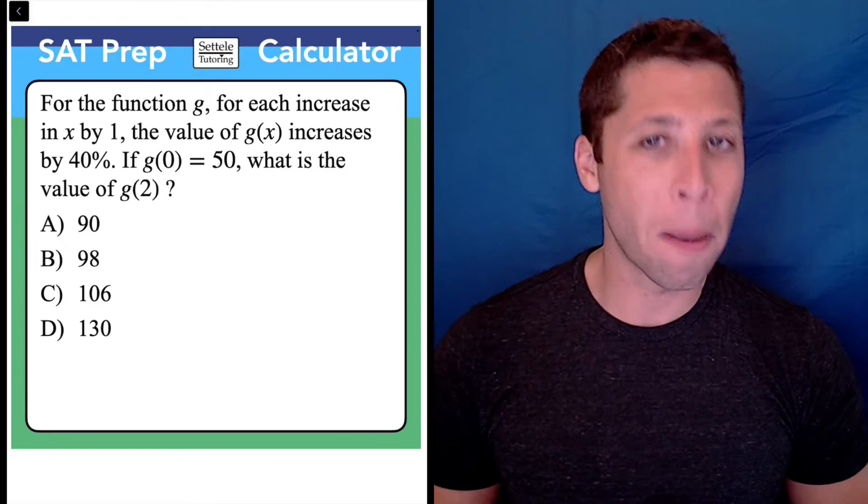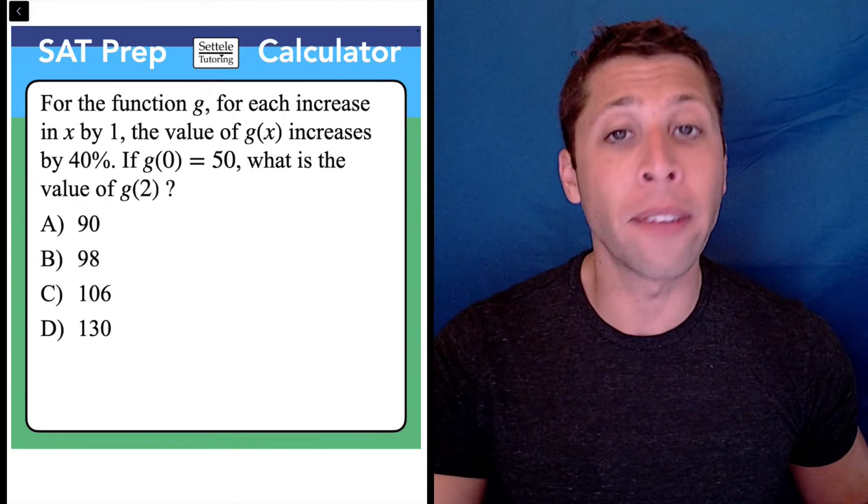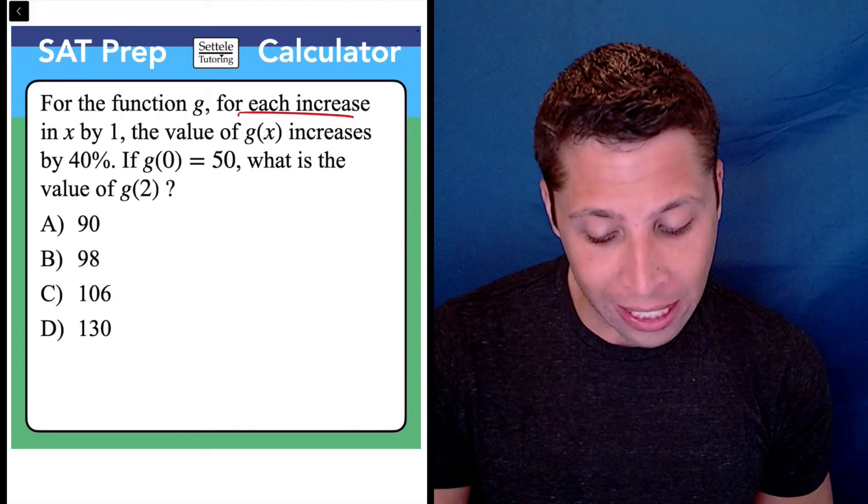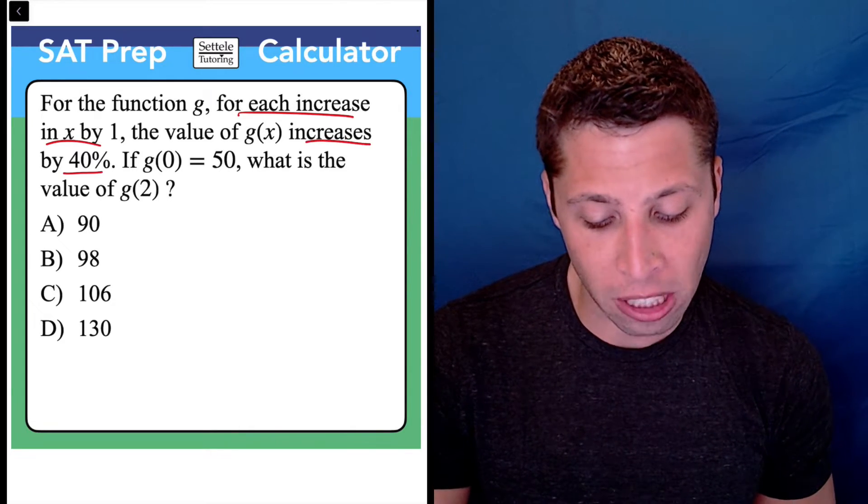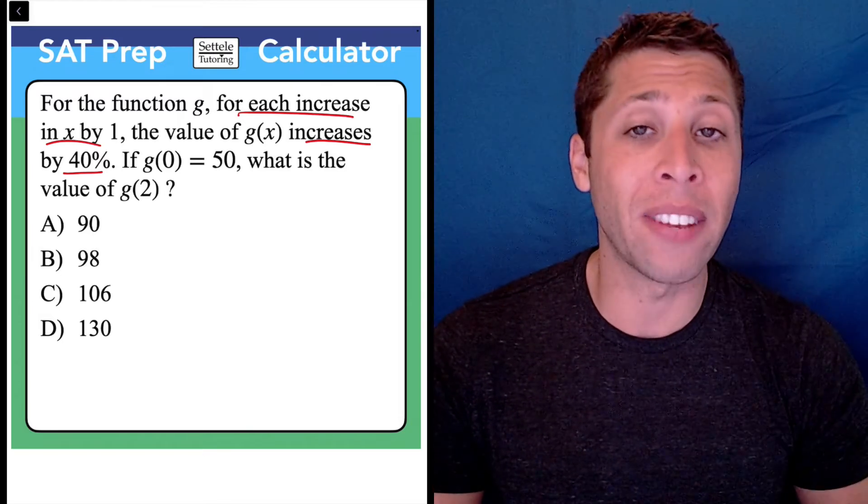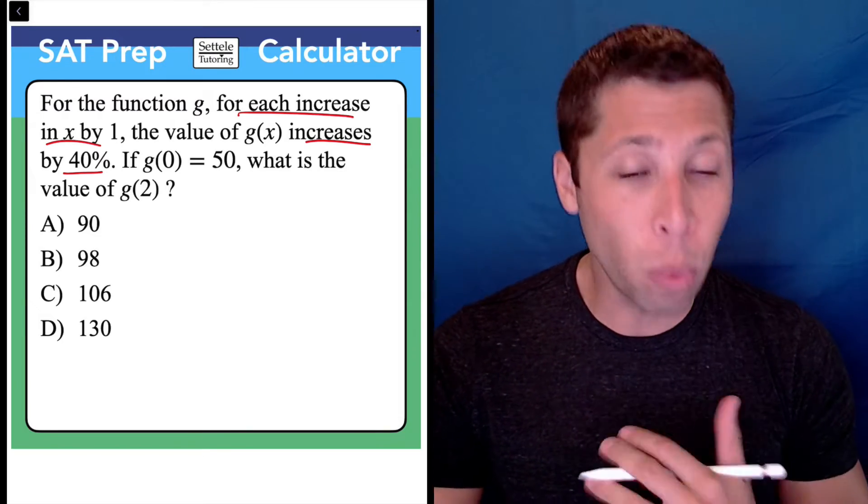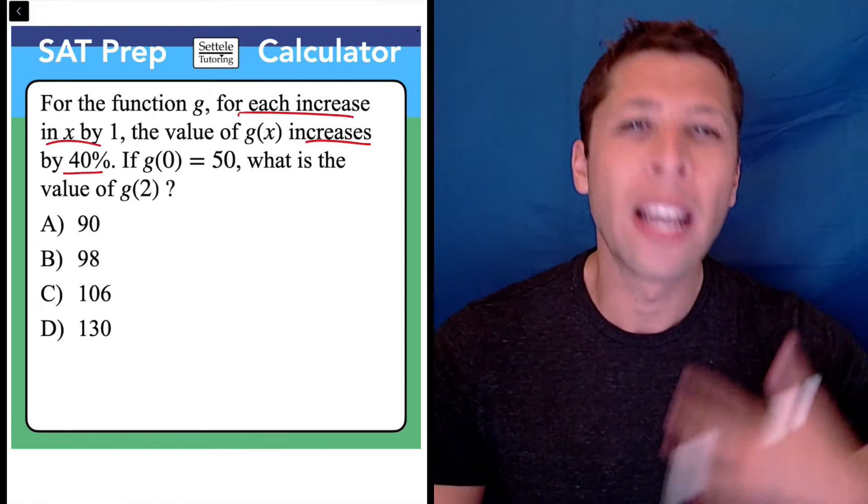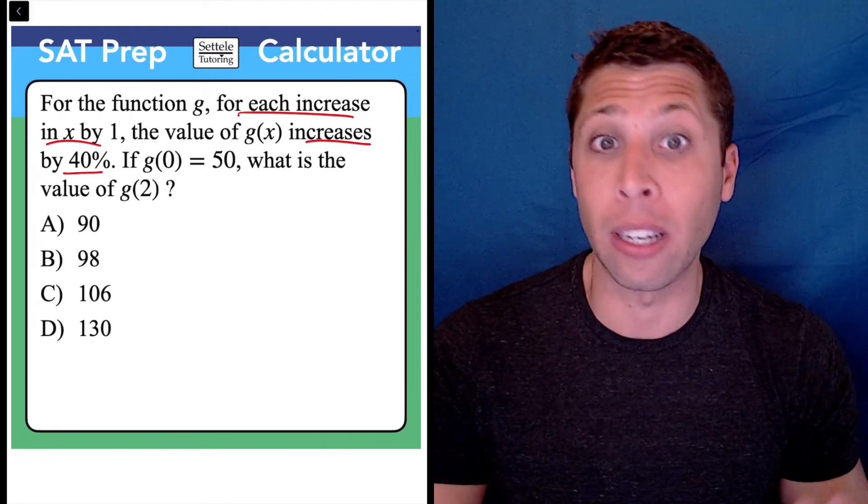This question uses a very complicated way to say something simple and common on the SAT. When they say for each increase by 1, it's increasing by 40%, they're telling you we have an exponential equation. It's weird that they're doing this, but you just need to get used to it. That's how exponential equations work—a percent increase or decrease each time.